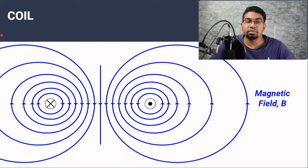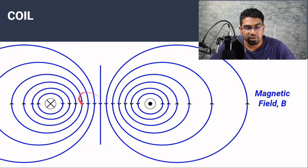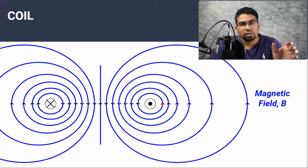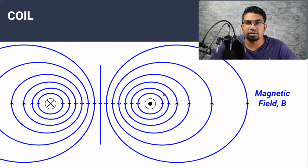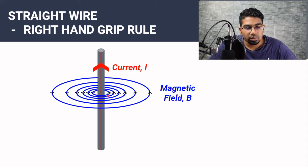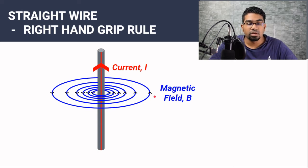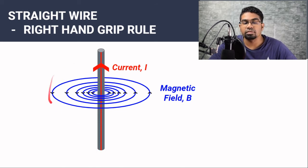Let's compare the magnetic fields formed in a coil and a straight wire. For the coil, the magnetic field at the center is more concentrated than outside the coil. Remember, the more concentrated the magnetic field lines, the stronger the magnetic field — so the field inside is stronger than outside. For the straight wire, the magnetic field becomes weaker as you go further from the wire. The gap between the magnetic field lines increases as you go further away, so the magnetic field is strongest near the wire and weakest further away.